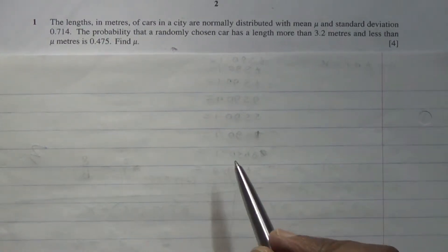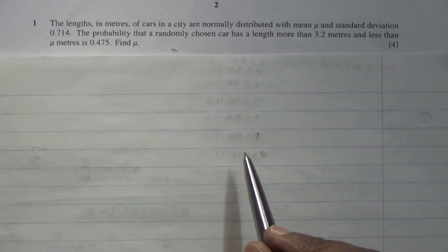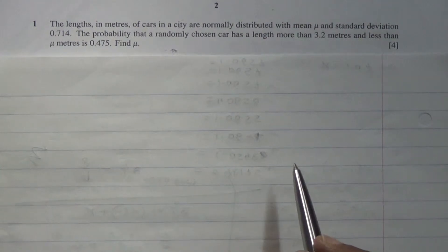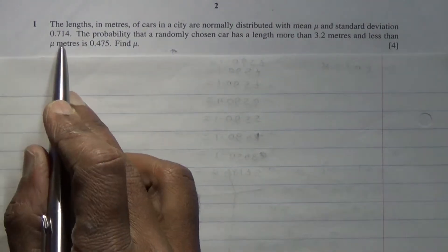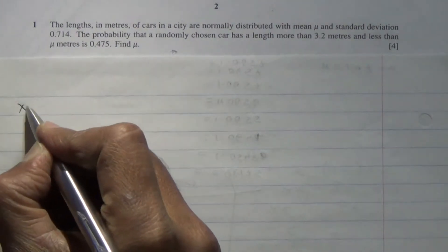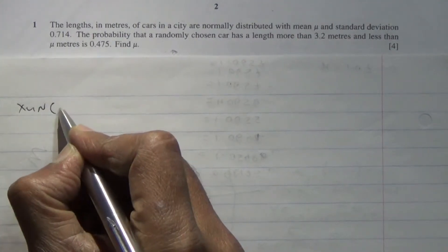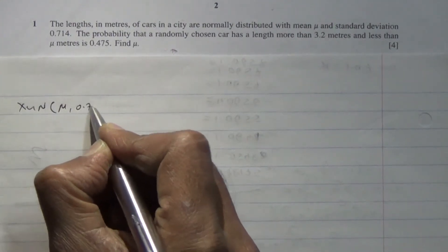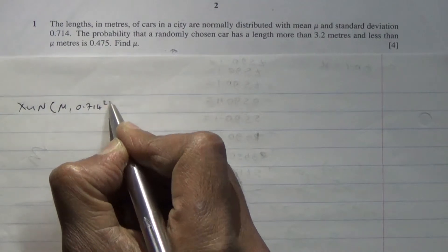Hi. The lengths in meters of cars in a city are normally distributed with mean mu and standard deviation 0.714. So x is normally distributed with mean mu, standard deviation 0.714.